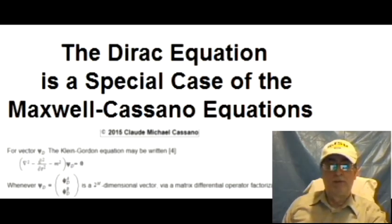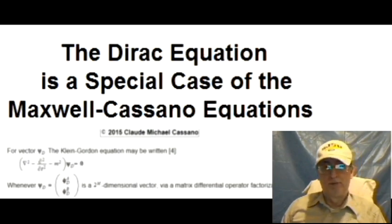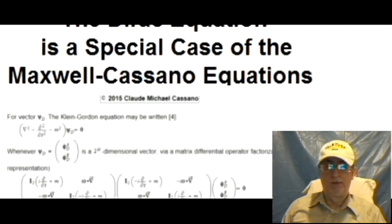The Dirac equation is a special case of the Maxwell-Casano equations. For vector phi of d, the Klein-Gordon equation may be written, see reference 4, whenever phi of d is a 2 to the m dimensional vector, via a matrix differential operator factorization.